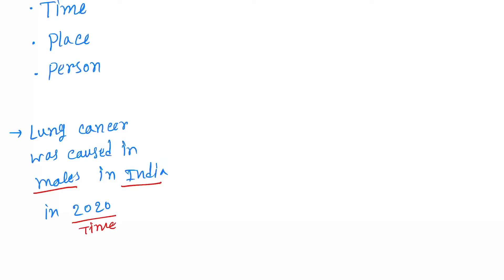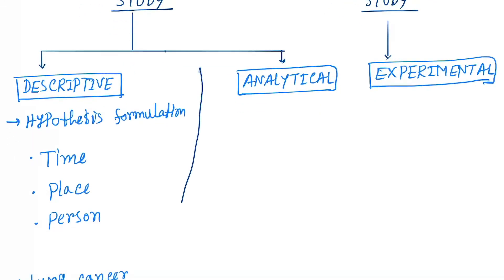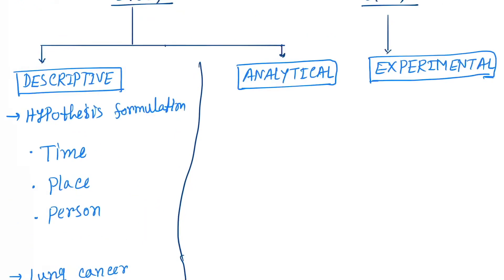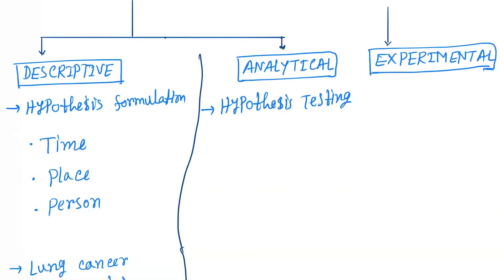Now let's understand analytical. So in analytical, the hypothesis testing occurs. And we do here number one is cohort study, that is the forward-looking study. Next is cross-sectional study and ecological study.